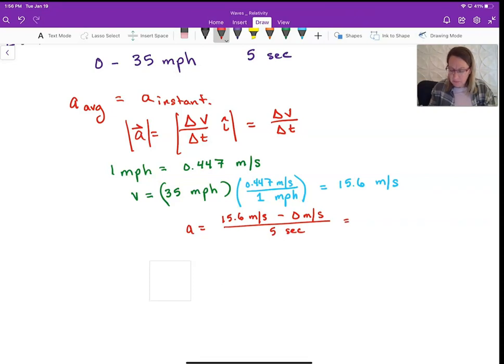And this becomes then 3.1 meters per second squared. And so those are units for acceleration. It's meters per second squared, because it's a change, a time that it takes for a velocity to change. And so that gives you a feeling. So you have a sense of what kind of speed that is.